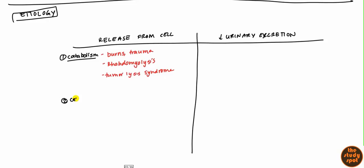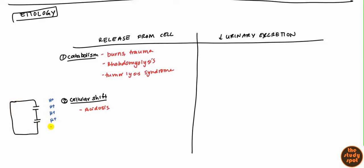The second cause is cellular shift — the cell doesn't rupture, but the potassium just decides to leave the cell and enter the bloodstream. One cause is acidosis. In acidosis, there's a high concentration of hydrogen ions outside the cell. Because of the gradient, hydrogen ions move into the cell. To offset this influx of hydrogen ions, the potassium ions inside will leave, causing a net hyperkalemia — hyperkalemic acidosis.